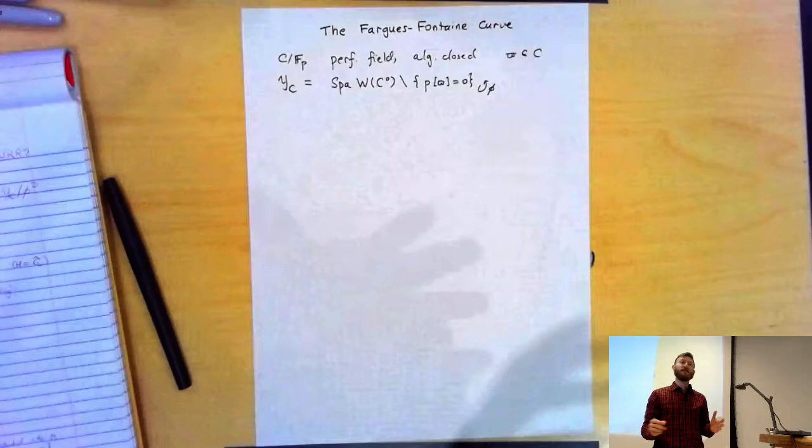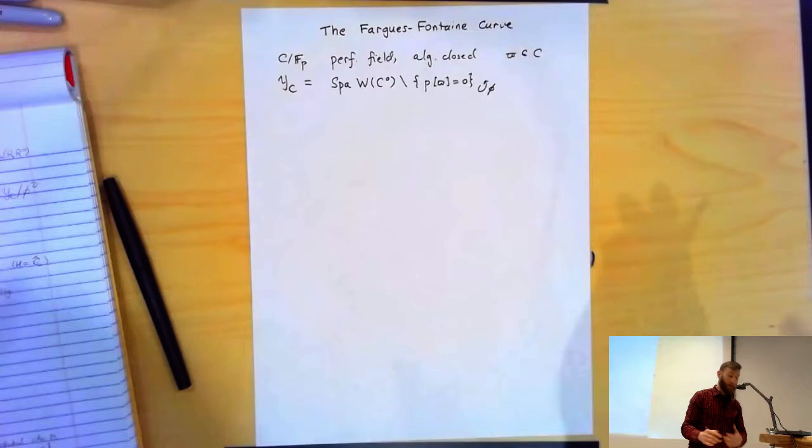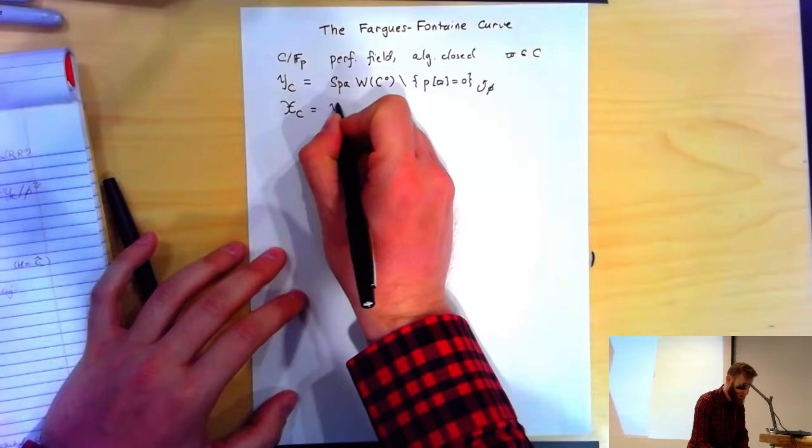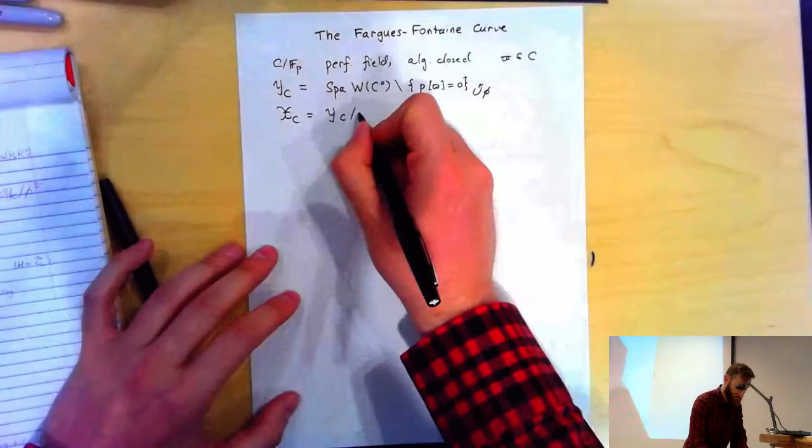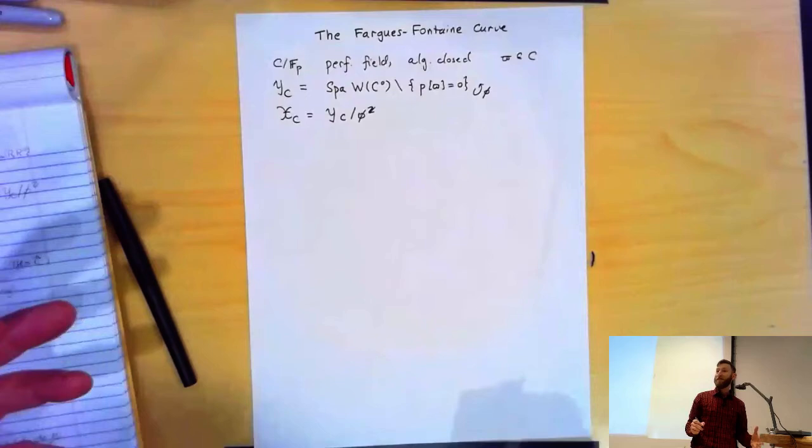φ acts on this in a totally discontinuous way — it really moves points far away from each other, and so that opens up the possibility of forming the quotient, which is exactly what Karan did last time. And in fact, you can do all of these constructions for a general perfectoid ring in characteristic P. I'm just doing this absolute case.